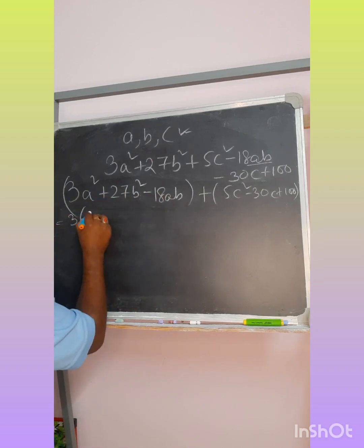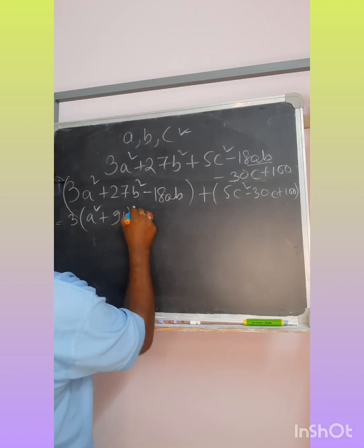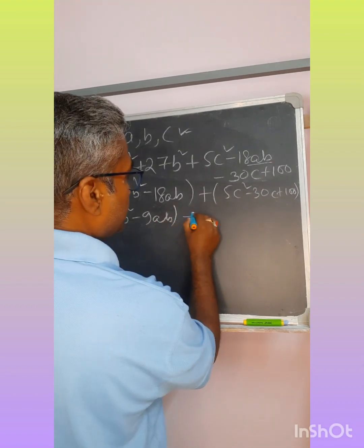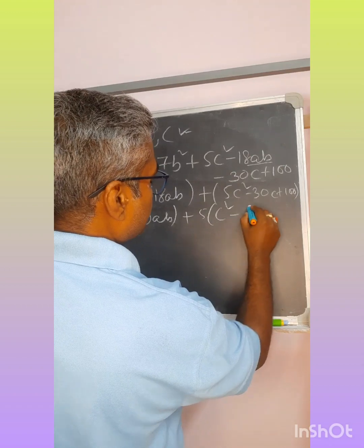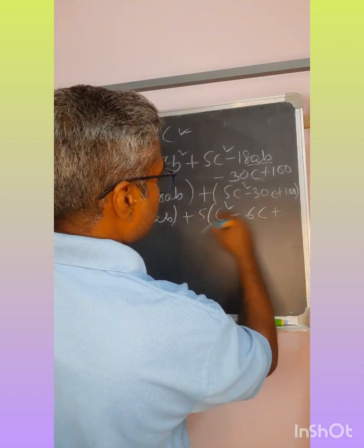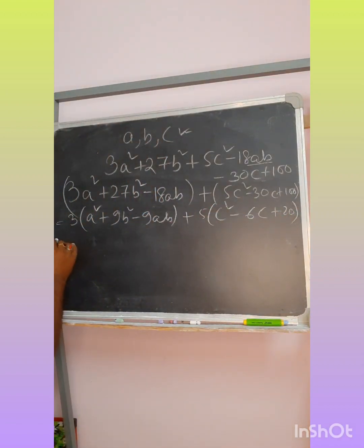I can take out 3, so it becomes A² + 9B² - 9AB. And here if I take out 5, it becomes C² - 6C + 20. This much I can simplify easily by seeing the equation.